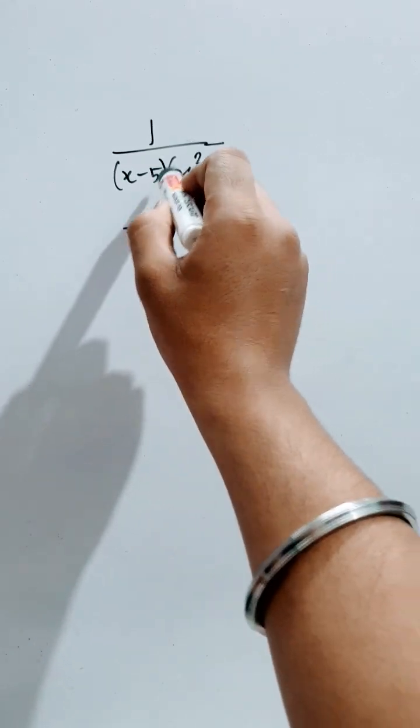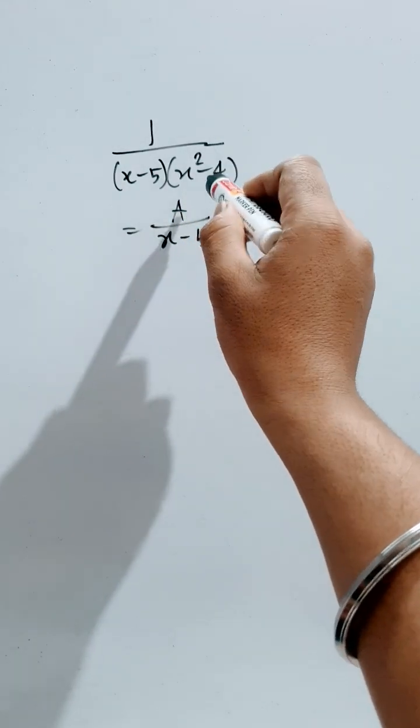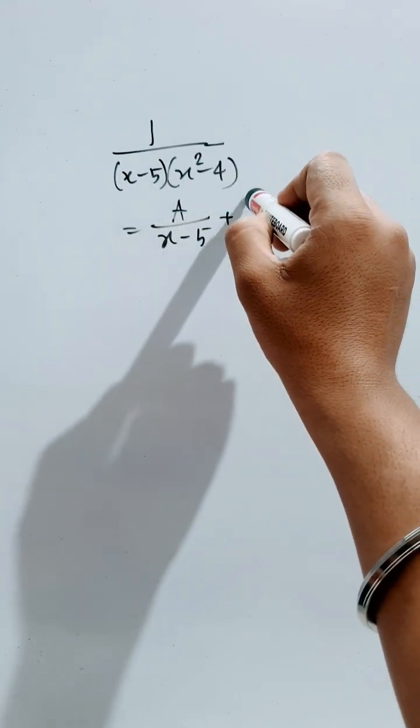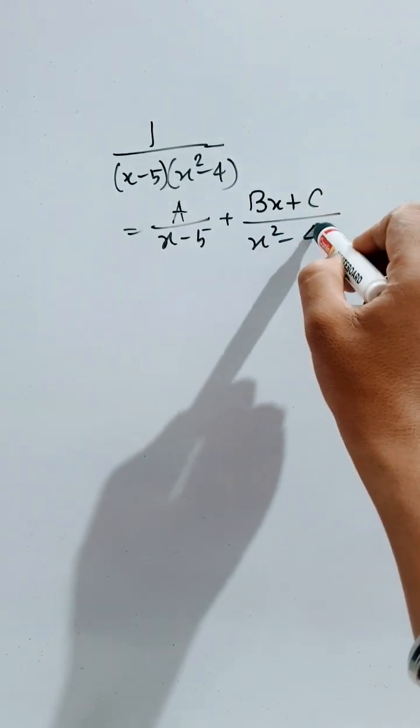So first of all, since this is linear, we will take A by x minus 5 plus, this is square but inside the bracket, so it will be Bx plus C divided by x square minus 4.